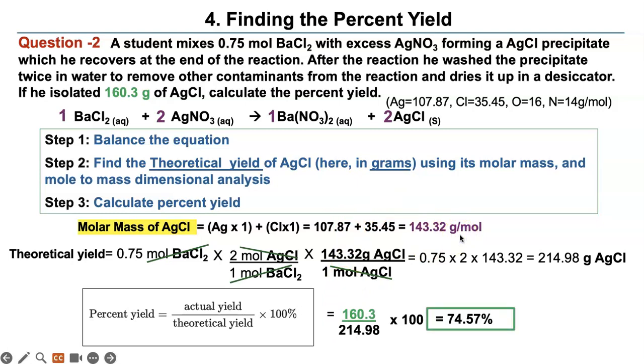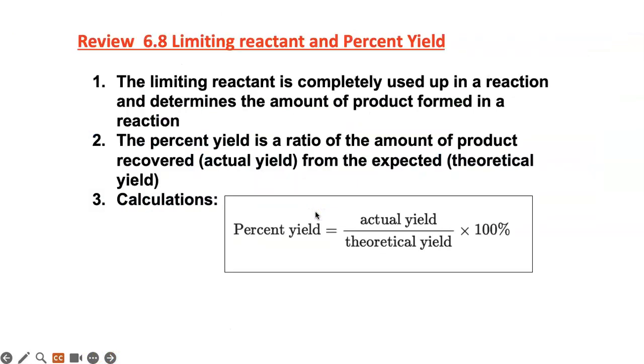That is your final percent yield. Try to do problems like this and the exit ticket and be familiar with this stuff. Now I'm going to do a review of everything we learned. There's basically three things. The limiting reactant is completely used up in a reaction and determines the amount of product formed in a reaction. Because all of it gets converted into a product, not the other guys. The percent yield is the ratio of the amount of product recovered, the actual yield, from the expected or theoretical yield. You put the actual yield on the top, the one you recover, and the one you calculate with your stoichiometric calculation at the bottom, times 100.